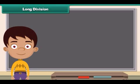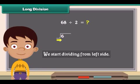Long division. We will now divide 68 by 2 by long division method. For this we write 68 divided by 2 as shown on screen. Look at the first number from left side in 68. It is 6. We start dividing from left side.